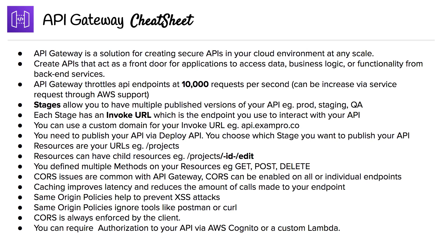CORS issues are common with API Gateway. CORS can be enabled on all or individual endpoints. Caching improves latency and reduces the number of calls made to your endpoint. Same origin policies help to prevent XSS attacks. Same origin policies ignore tools like Postman or curl — they ease that restriction so you can work with those tools.